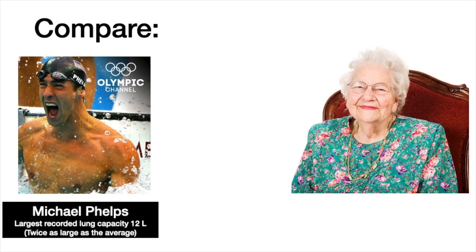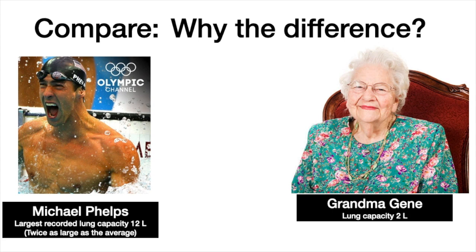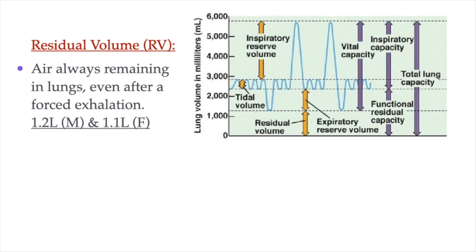In comparison, 80-year-old Grandma Jean's lung capacity is only 2 liters of air. Now let's discuss how we measure different respiratory volumes and capacities. The residual volume is the amount of air that always remains in our lungs — even after we forcibly exhale as much air as possible, we can never truly empty our lungs. The residual volume is about 1.2 liters on average in males and about 1.1 liters on average in females.